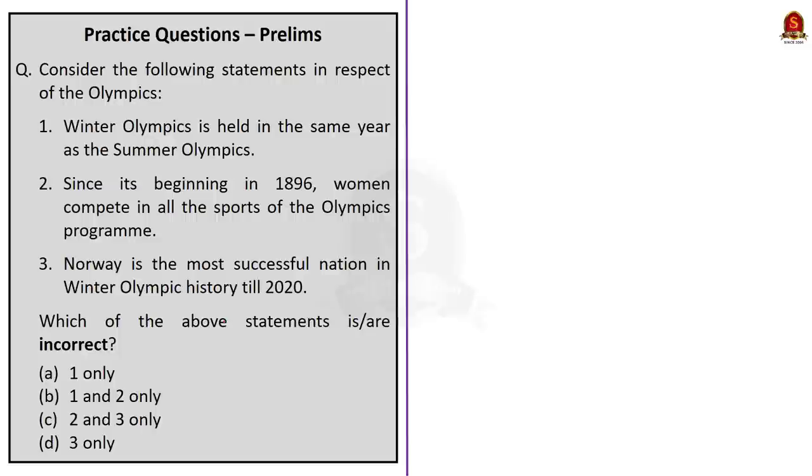We have four practice prelims question today. Let us see them one by one. Let us take up the first question now. This question is about Olympics. Here, three statements are given. We have to find the incorrect statement. Now, let us take up the first statement. Winter Olympics is held in the same year as the Summer Olympics. This statement is incorrect. Because only from 1924 to 1992, the Summer and Winter Games were held in the same year, every four years.